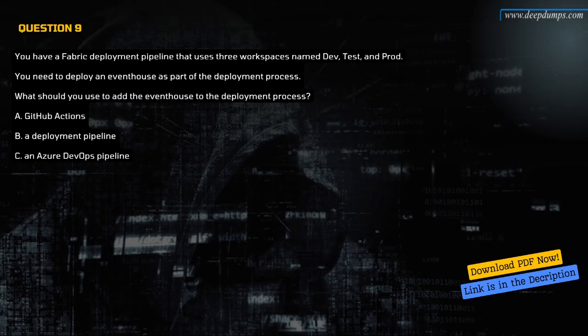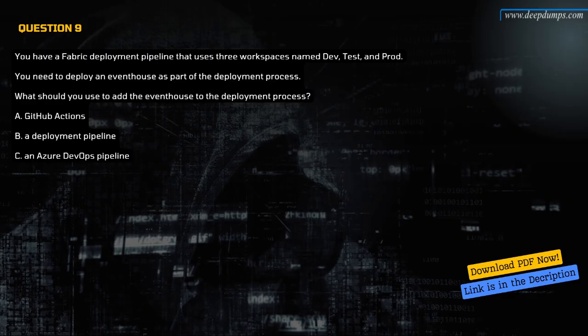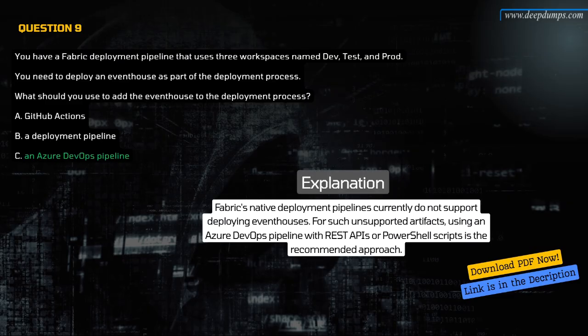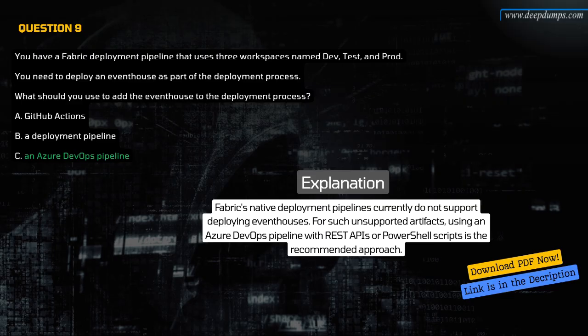Question 9. You have a Fabric deployment pipeline that uses three workspaces named dev, test, and prod. You need to deploy an event house as part of the deployment process. What should you use to add the event house to the deployment process? A. GitHub Actions. B. A deployment pipeline. C. An Azure DevOps pipeline. The correct answer is C. An Azure DevOps pipeline. Fabric's native deployment pipelines currently do not support deploying event houses. For such unsupported artifacts, using an Azure DevOps pipeline with REST APIs or PowerShell scripts is the recommended approach.